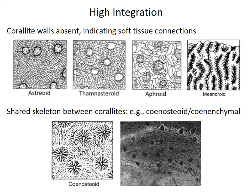Or, again, we can look at this shared skeleton in the synosteoid, or the coenenchymal corals — scleractinians or tabulates, for example.